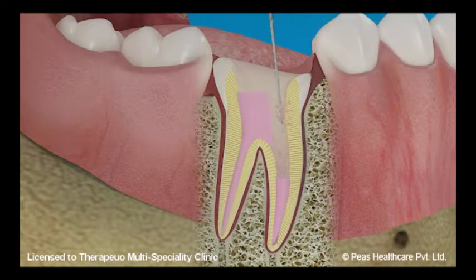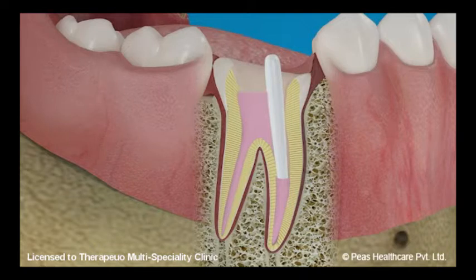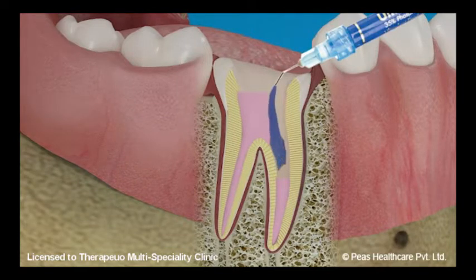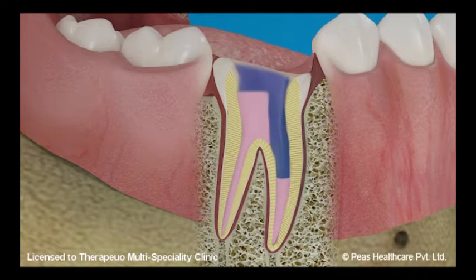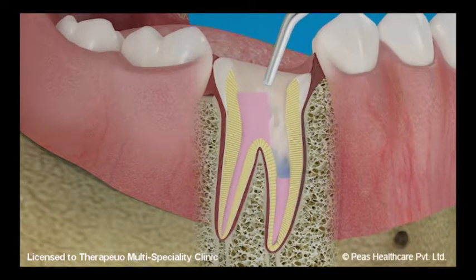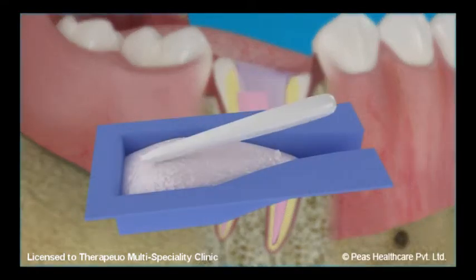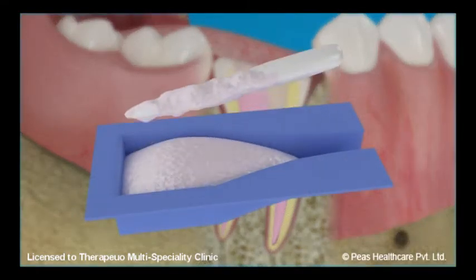If your dentist is using a fiber post, he or she will use special sequential drills to shape the post space to receive a good fitting post. The post space is then dried and pre-treated with an acid-based etch.